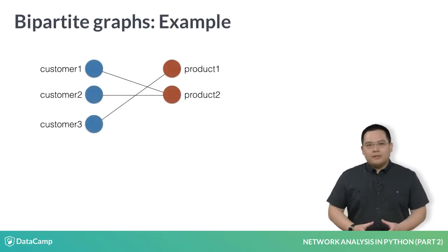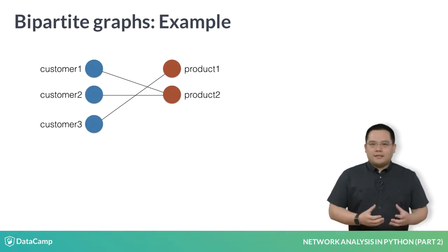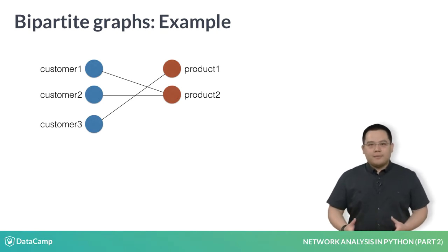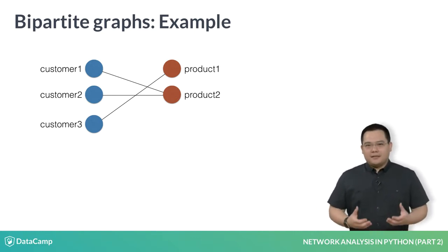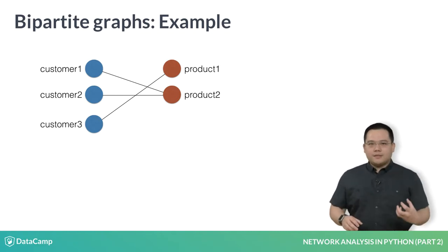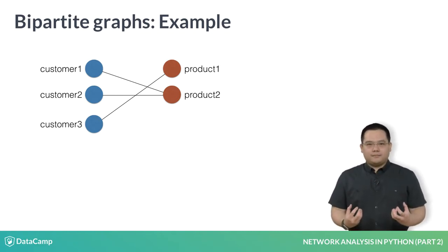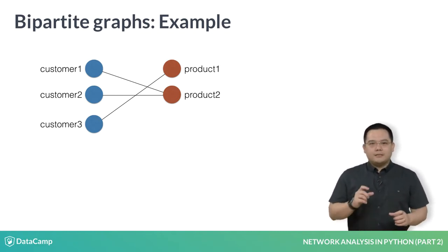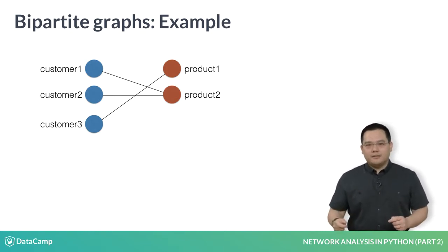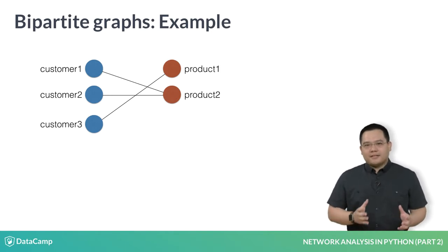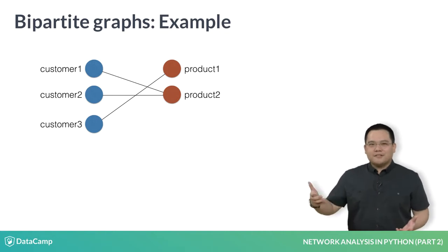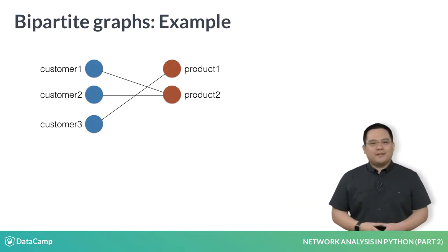Let's use an example to make this concrete. An example where bipartite graphs may come in handy is in the modeling of purchases that a customer makes. In this case, the nodes are partitioned into two sets: the customers partition and the products partition. Edges denote that a customer has purchased a particular product. It makes perfect sense that products cannot be connected to one another — after all, a product cannot purchase a product. Likewise for customers.